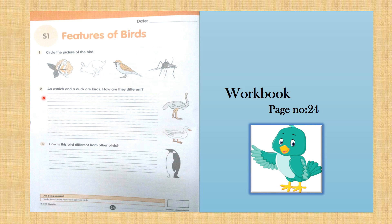Question number two: an ostrich and a duck are birds — how are they different? You have to write the difference between an ostrich and a duck. Question number three: how is this bird different from other birds? Look here — which bird is this? This is a penguin. How is this penguin different from other birds? Write your answer.